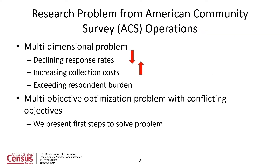We focus our research on the American Community Survey operations. It's a multidimensional problem with decreasing response rates, increasing collection costs, and a fear of exceeding the respondent burden. This makes it a multi-objective optimization problem with conflicting objectives, and we present the first steps to solve the problem.